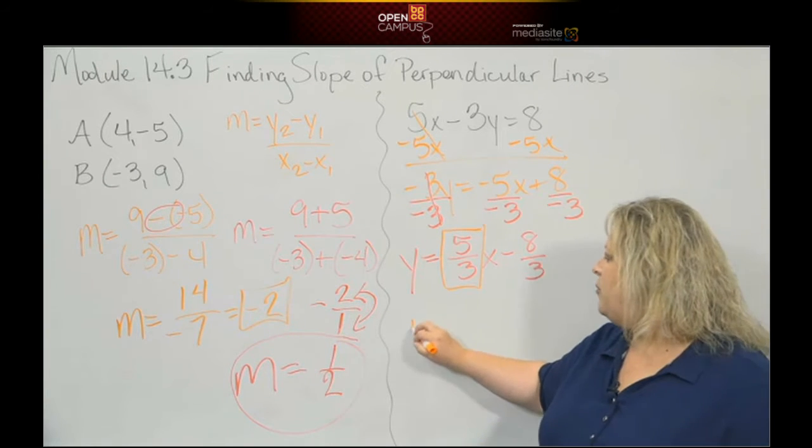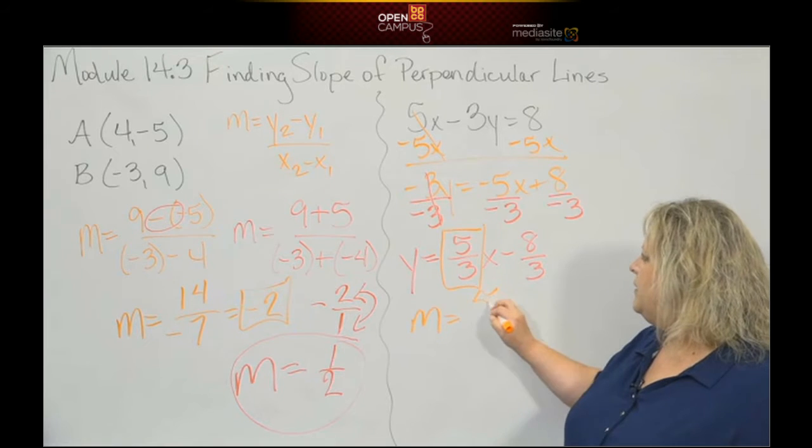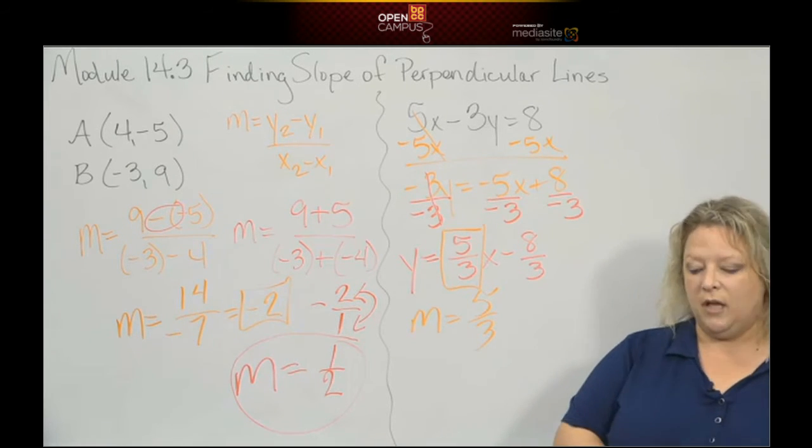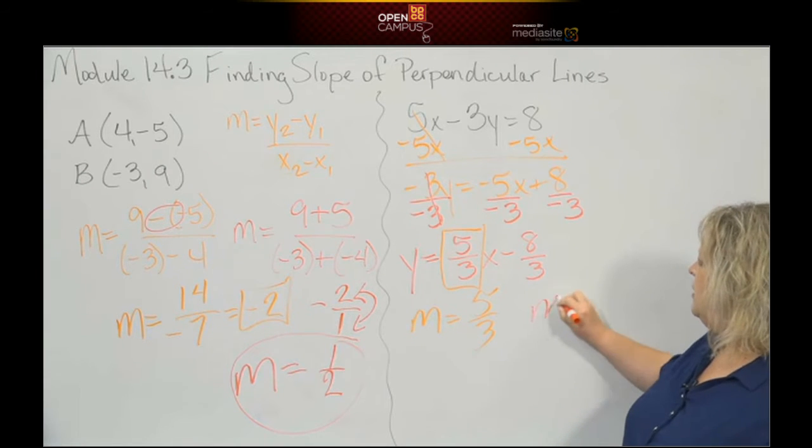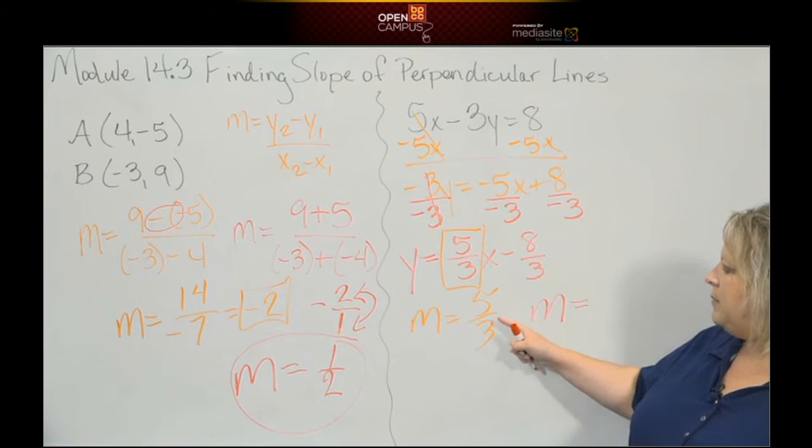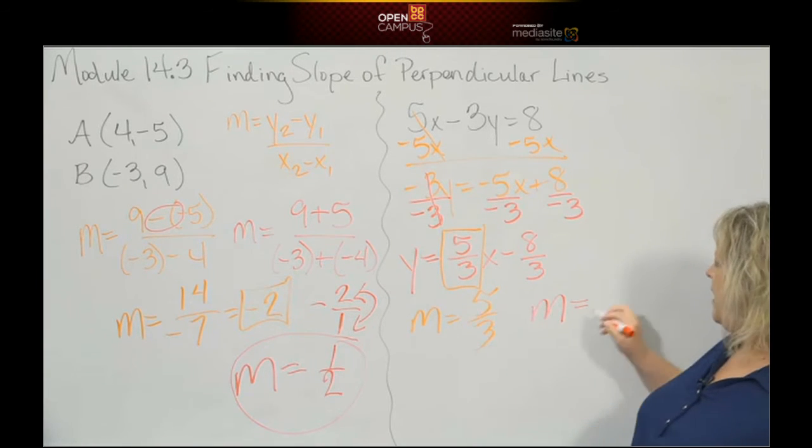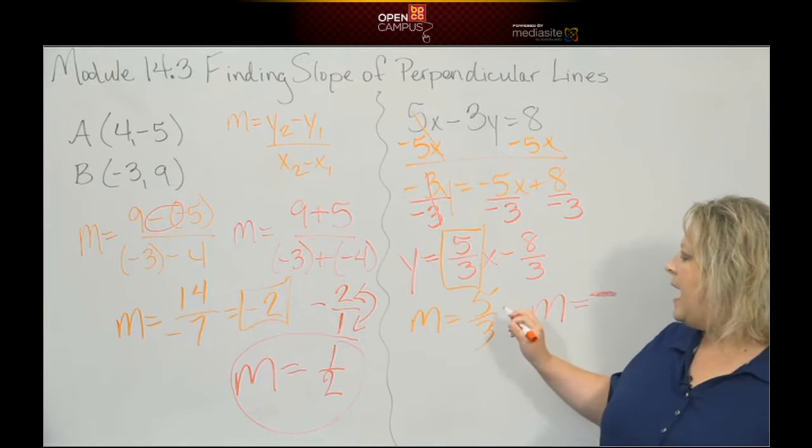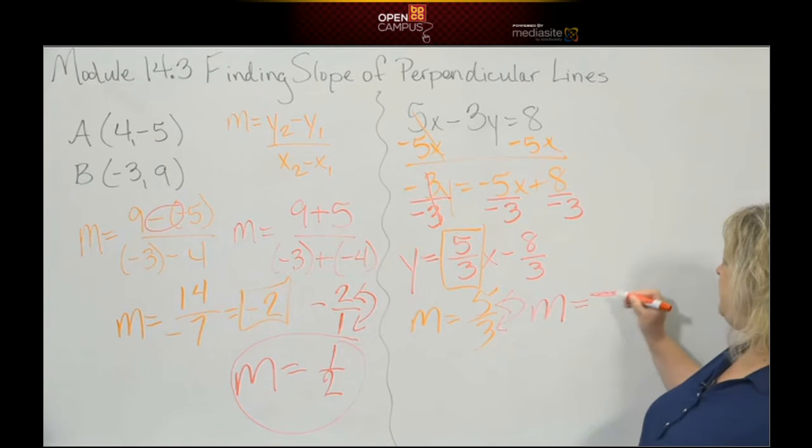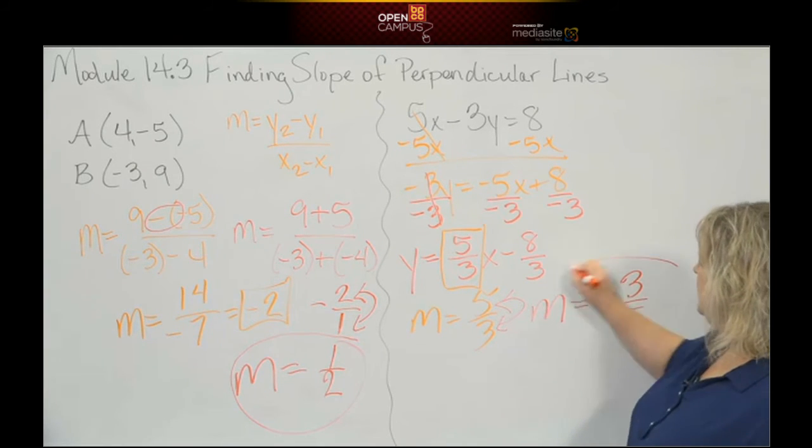Your slope, the new slope, the new slope that is going to be perpendicular to this line is the opposite, meaning this is a positive 5 thirds. Yours is going to be negative something, and the reciprocal. Reciprocal means take your fraction and flip it, so 3 over 5.